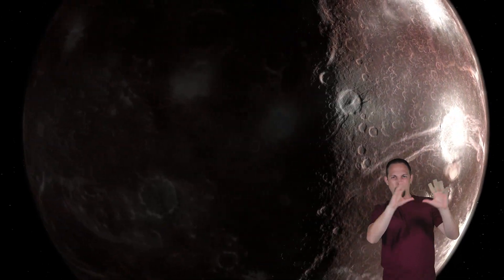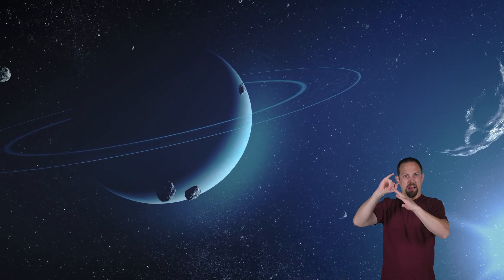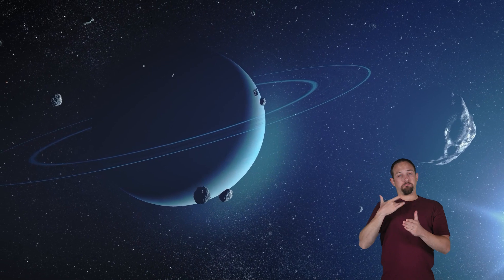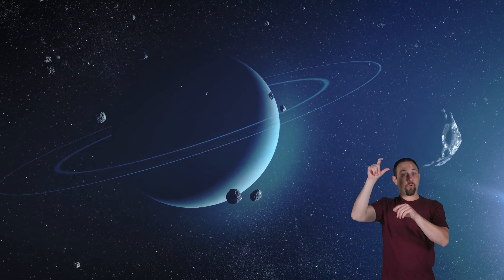Titania is Uranus' largest moon and has a surface of giant canyons and ice-covered mountains. Scientists believe these moons may have been hit by giant objects in the past, which changed their shapes.